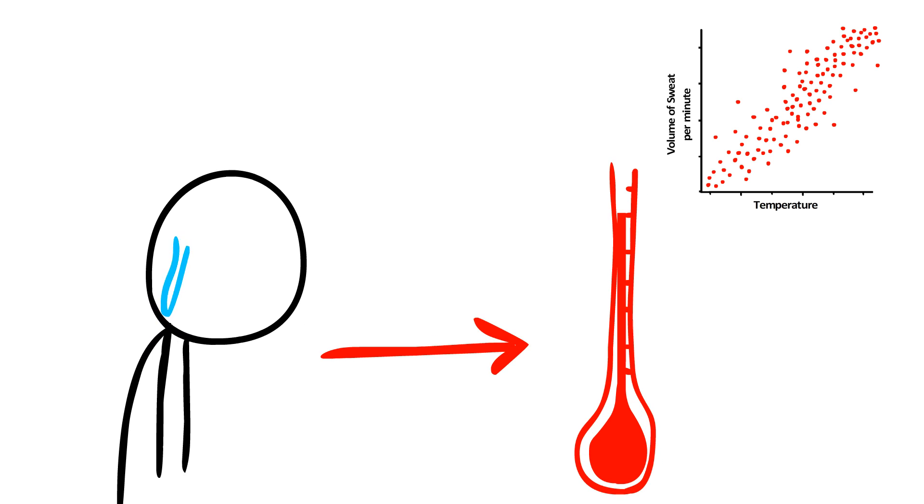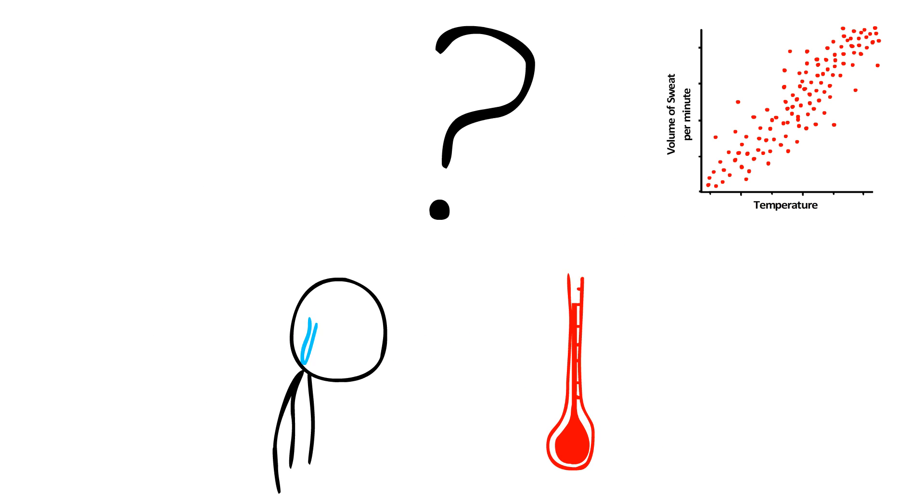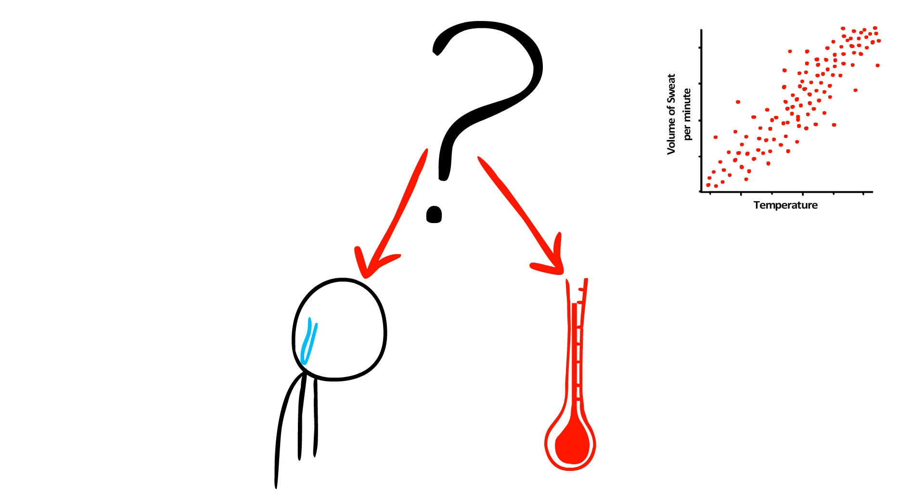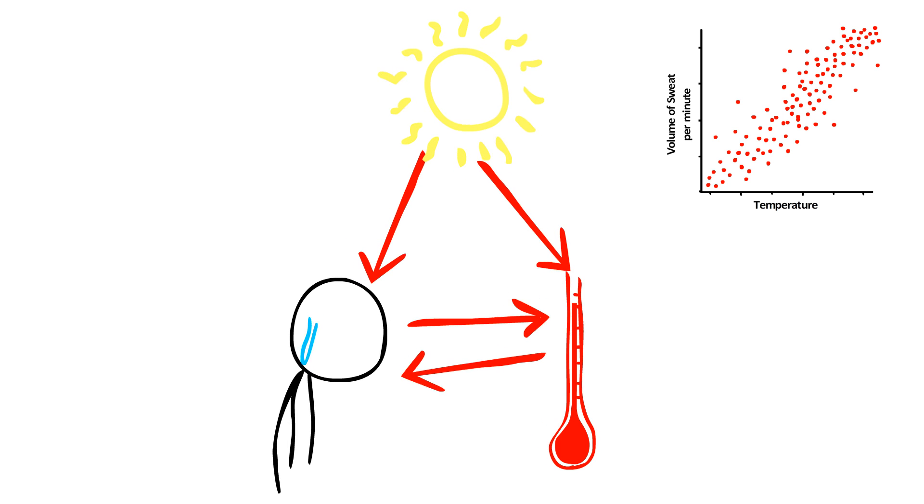It's also just as likely that neither one of these variables is causing an increase in the other, and that a third variable that we don't know about is causing an increase in both of them separately, like the amount of radiation from the sun, or something. It could also be any combination of any of these explanations.